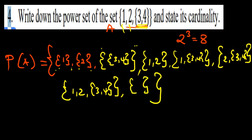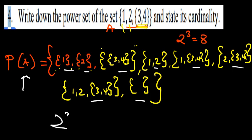Let's count to confirm they are 8: 1, 2, 3, 4, 5, 6, 7, 8. So the power set of set A is complete. The cardinality is 2 to the power 3, which is 8 subsets. That's all for this video.